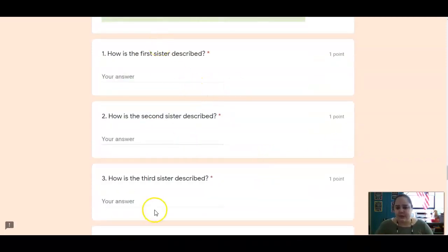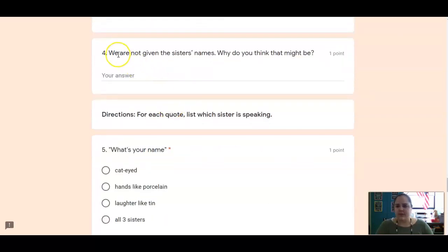So, we've got one, two, three sisters. How are they described? I kind of just told you, but go back into the text. How do they describe those three sisters? And then, why are we not given their names? Why do you think the author did that?